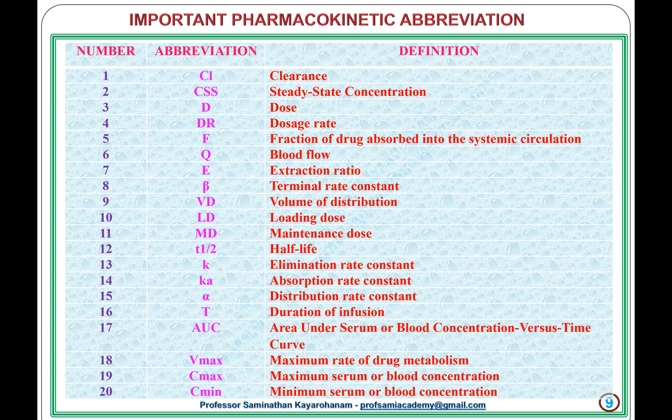Important pharmacokinetic abbreviations include: clearance, steady state concentration, dose, dosage rate, fraction of drug absorbed into the systemic circulation, blood flow, extraction ratio, the terminal rate constant, the volume of distribution, loading dose, maintenance dose, half-life, the elimination rate constant, the absorption rate constant, distribution rate constant, duration of infusion, area under serum or blood concentration versus time curve, the maximum rate of drug metabolism, maximum serum or blood concentration, and minimum serum or blood concentration.